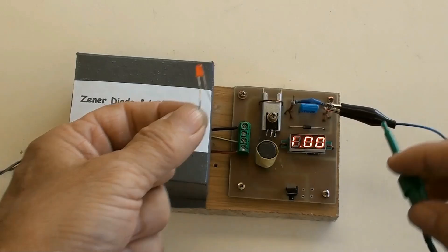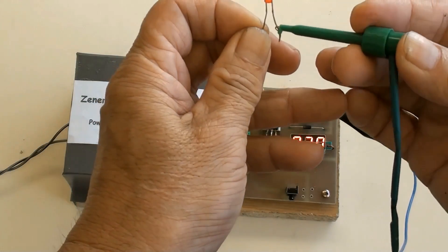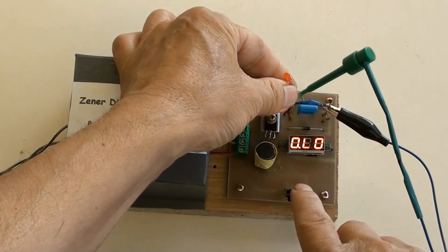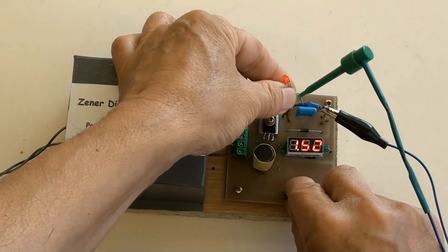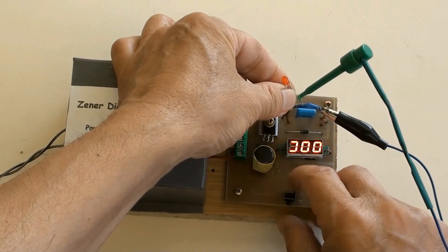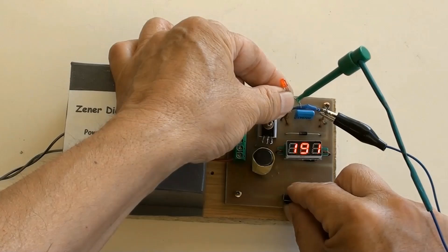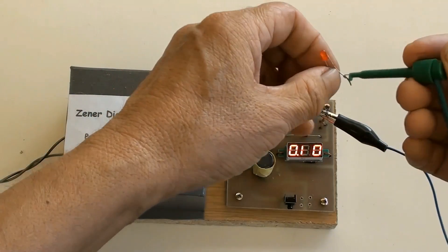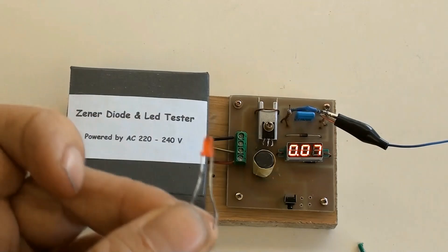Testing this red lead. The mini meter showed a voltage value of 1.92 volt. So this is 2 volt red lead.